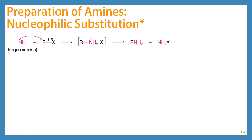You also need an excess of ammonia because once you get to the intermediate, you have to bring in another equivalent of ammonia to pick up a proton. That's how you end up with the product. You end up making ammonium out of this ammonia.